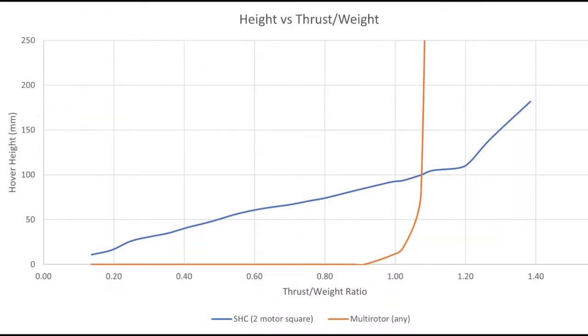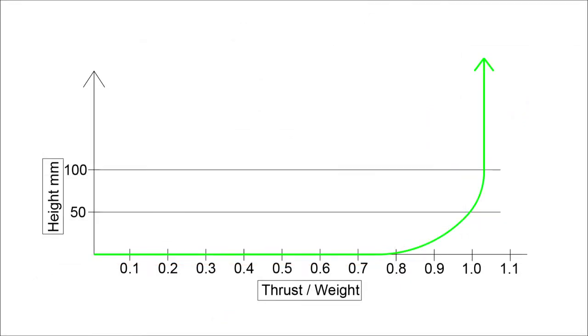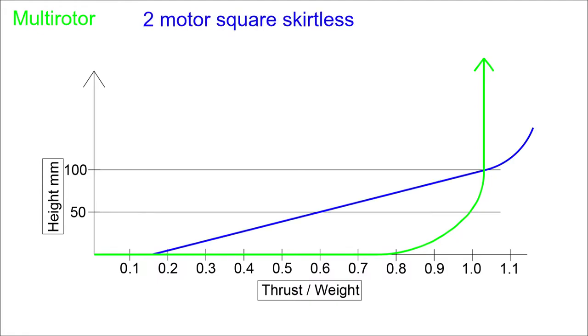What I've done now is I've overlaid the thrust to weight curve onto this graph with the multirotor one. That's thrust to weight curve of a multirotor. And I've marked on 100 millimeters, which is where the thrust to weight of the two-motor square craft reaches one. I think I've drawn it slightly off, but it's an indication.